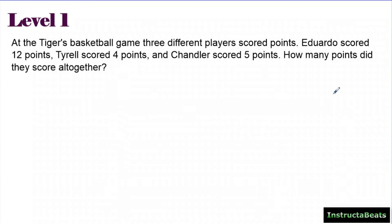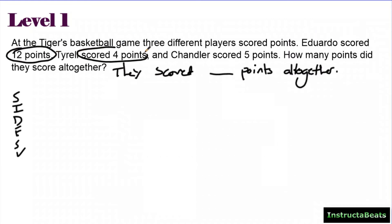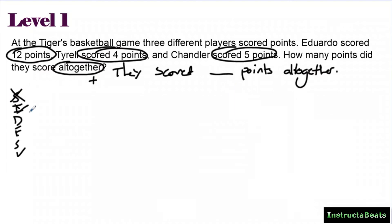Here's a level one type of question. I'm going to write a statement: 'They scored blank points all together.' I'll write down my size check. So at the Tigers basketball game, three different players scored points — Eduardo scored 12 points, Tyrell scored four points, and Chandler scored five points. How many points did they score all together?